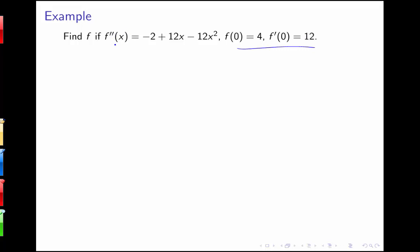We're given the second derivative: f double prime of x is negative 2 plus 12x minus 12x squared. We're also given a y-value of the function and a y-value of the first derivative at 0. So the first thing I need to do, since my goal is to find f, is to find f prime of x. Finding f from f double prime requires finding two antiderivatives — f prime and then f.